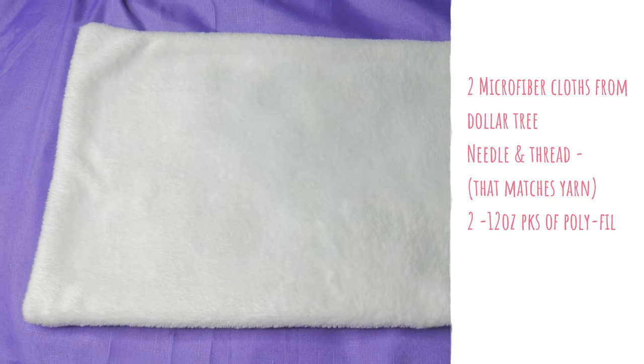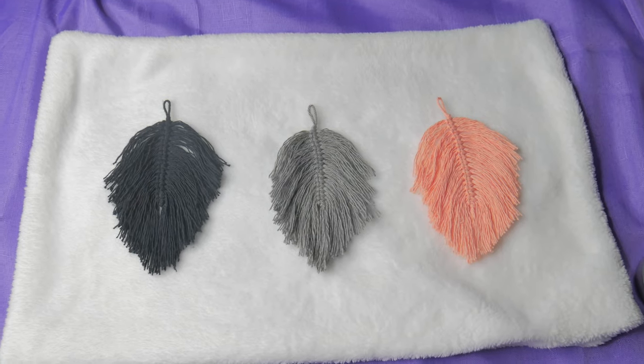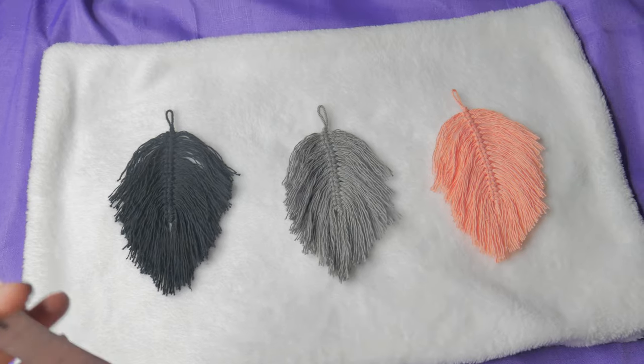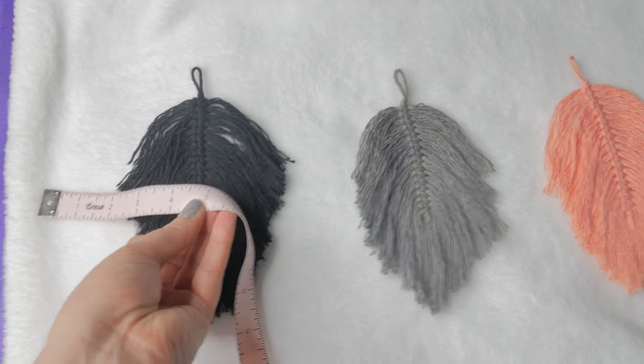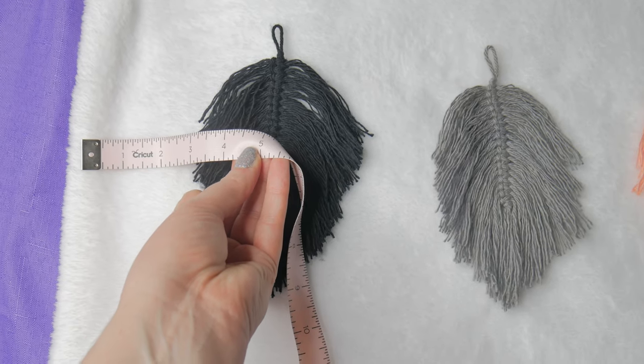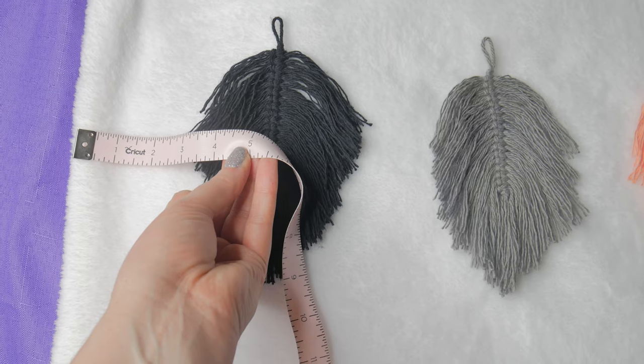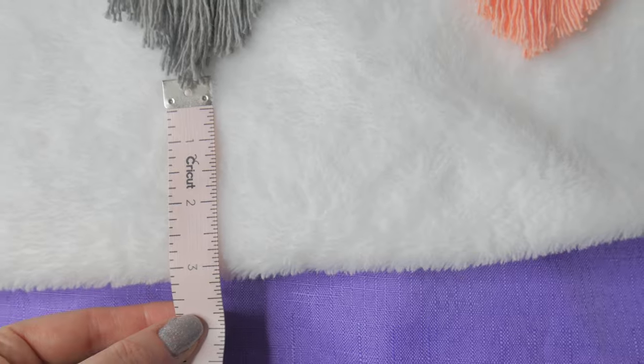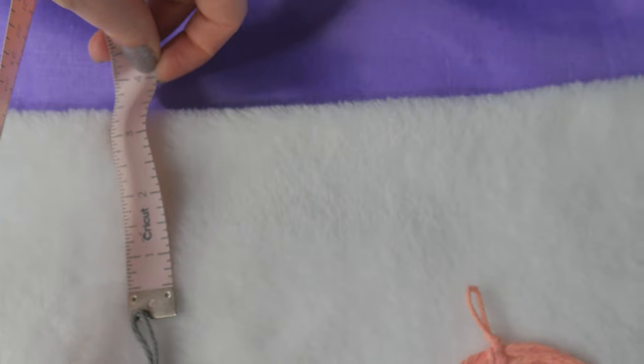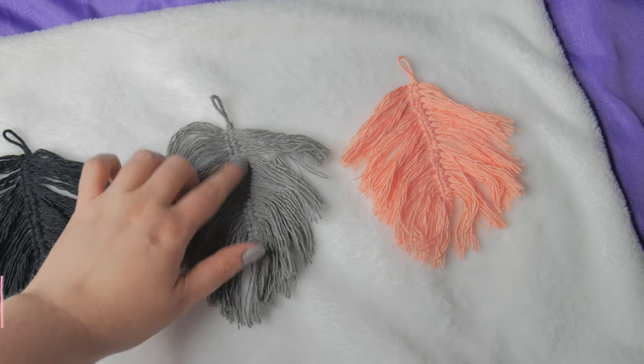So after sewing your two microfiber cloths together, now we are going to be sewing our yarn feathers on top of our pillow. And you can space these out on your pillow any way that you would like. I just kind of did it like three, three and a half inches from either side and top to bottom, and then also in the middle I kind of spaced it out about two inches from each other in the middle as well.